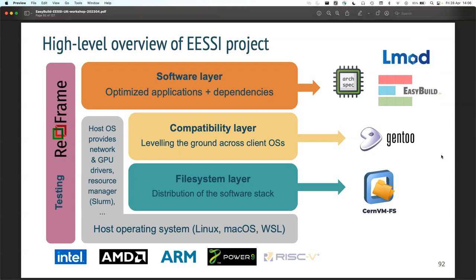The middle layer - the compatibility layer - is what we need to shield ourselves from the host operating system. We're basically building our own mini Linux environment so we don't have to rely on what the host OS provides. The main part is glibc - we have our own glibc, so when we're running on Ubuntu, Fedora, or CentOS Linux, we don't really care because we won't be using their glibc. InfiniBand drivers and GPU drivers still need to come from the host because they're too tightly tied to the kernel, but we'll have ways of detecting what's there and installing missing stuff.